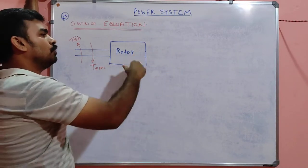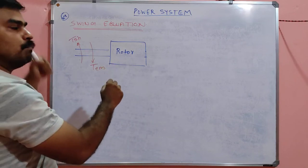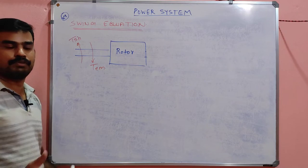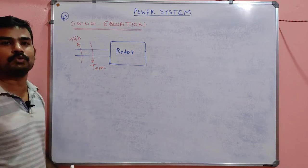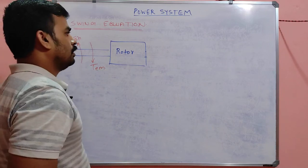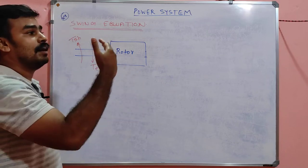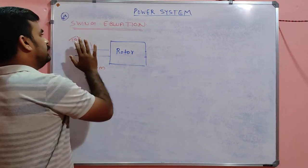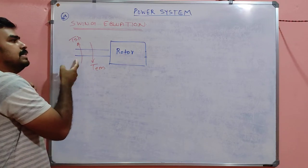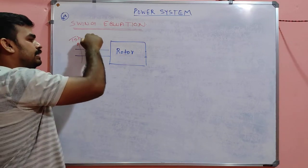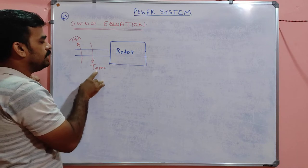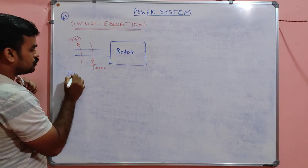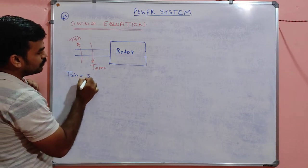If you multiply torque into angular velocity (in radians per second) you will get power. So definitely Tsh is in one direction, and the electromagnetic torque Tem is in the other direction. I will represent the shaft torque as Tsh and the electromagnetic torque as Tem.